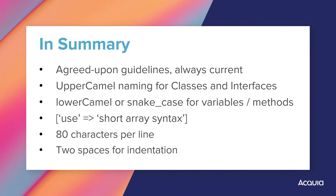Congratulations on getting familiar with Drupal coding standards. Remember, Drupal coding standards are a collection of agreed upon guidelines of the best practices to follow when writing code for a Drupal project — you may not be the last person that works on that code. Key takeaways: use upper camel naming for classes and interfaces; use either lower camel or snake case for method and variable names, but pick one style and be consistent; always use the short array syntax for arrays in PHP; strive to keep each line less than 80 characters; and always use two spaces — never tabs. Please review the links provided to get a broader overview, and we'll learn more as we gain experience. Happy learning!